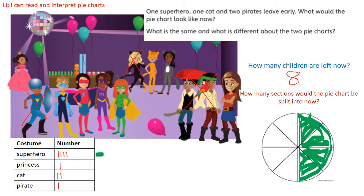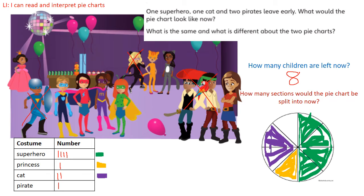How many princesses do we have? We still only have one princess — she was yellow. So as before, we are going to colour in one section because we have one princess. Now cats — I think the cats were purple. It doesn't really matter; as long as I write a new key, it doesn't matter if I use a different colour. We now only have two cats, so we colour those in purple. And finally we've got our pirates — that was blue. Now we only have one pirate, so we colour in the last section blue.